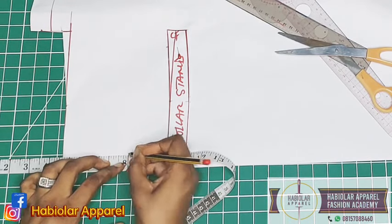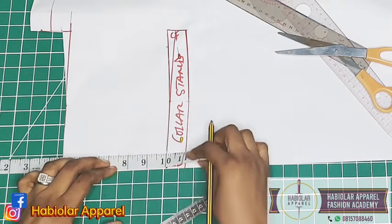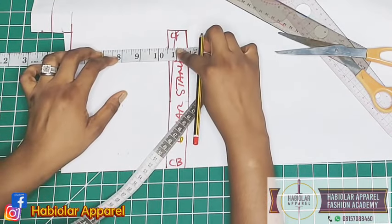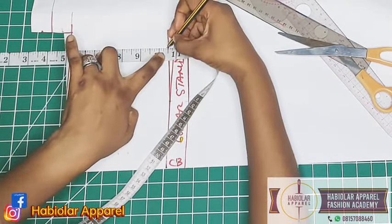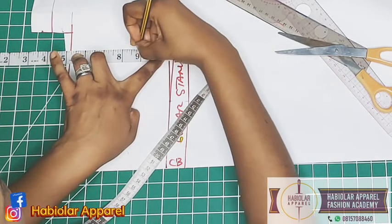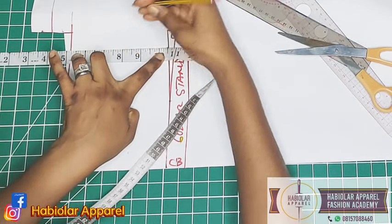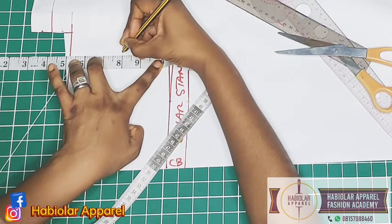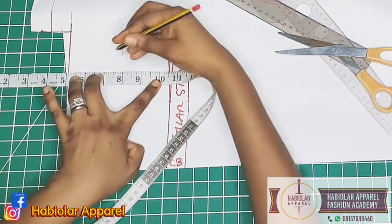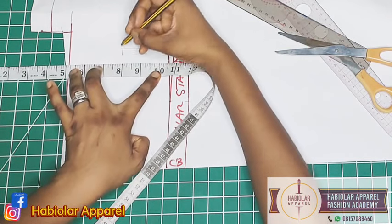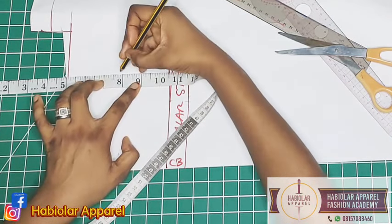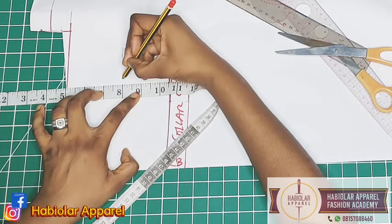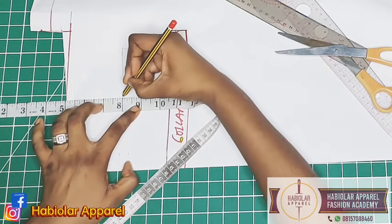I'll just stop at one inch before I get to the end of this collar stand. From there I will determine my collar width. I can just use two inches or even two point five for the width. Remember the collar stand is not straight so you want to follow the curve.